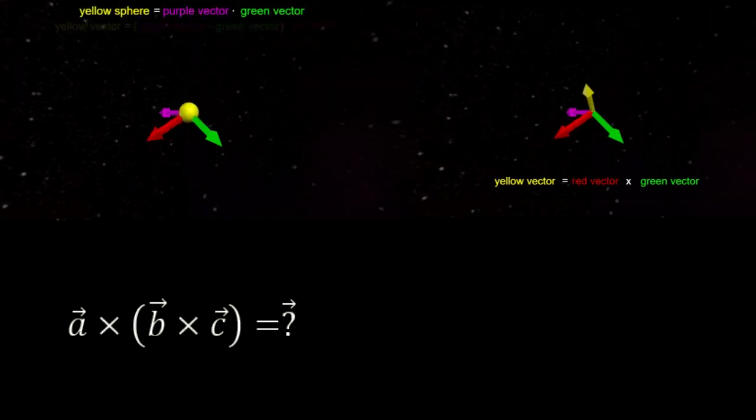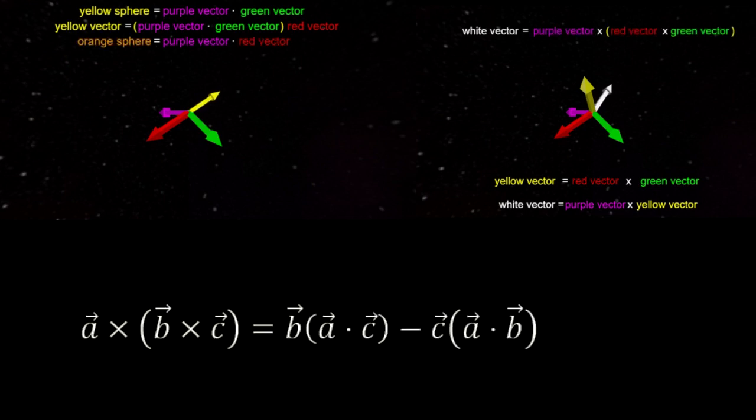If, instead, you're taking a cross product of a cross product, you can split up the calculation into two terms with dot products.